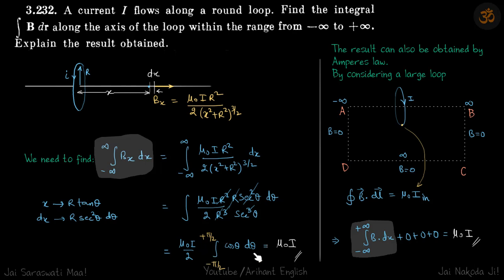The integral of cos theta d theta is sine theta, evaluated from minus pi by 2 to plus pi by 2, which is 2. So mu naught i by 2 times 2, which is mu naught i, which is our answer.